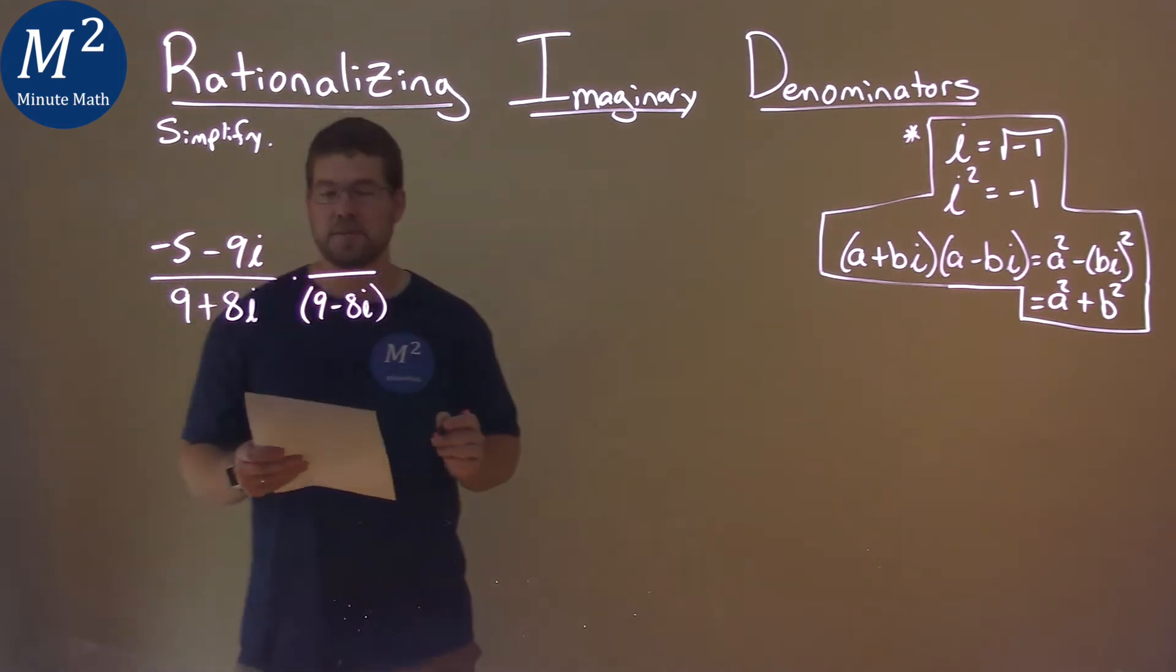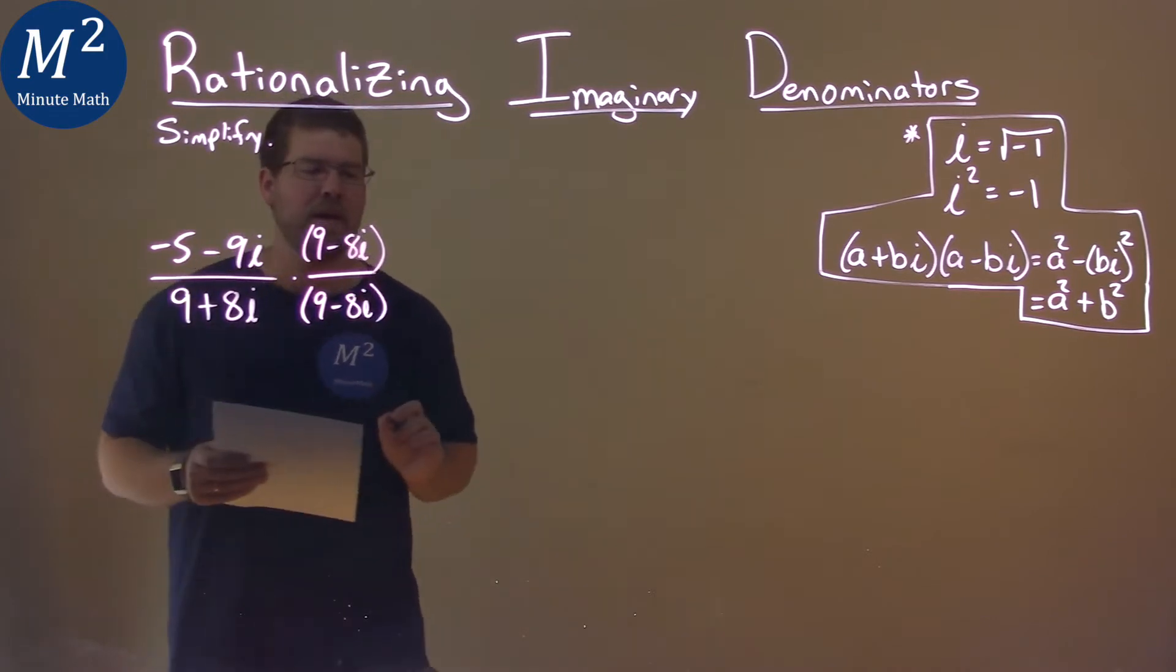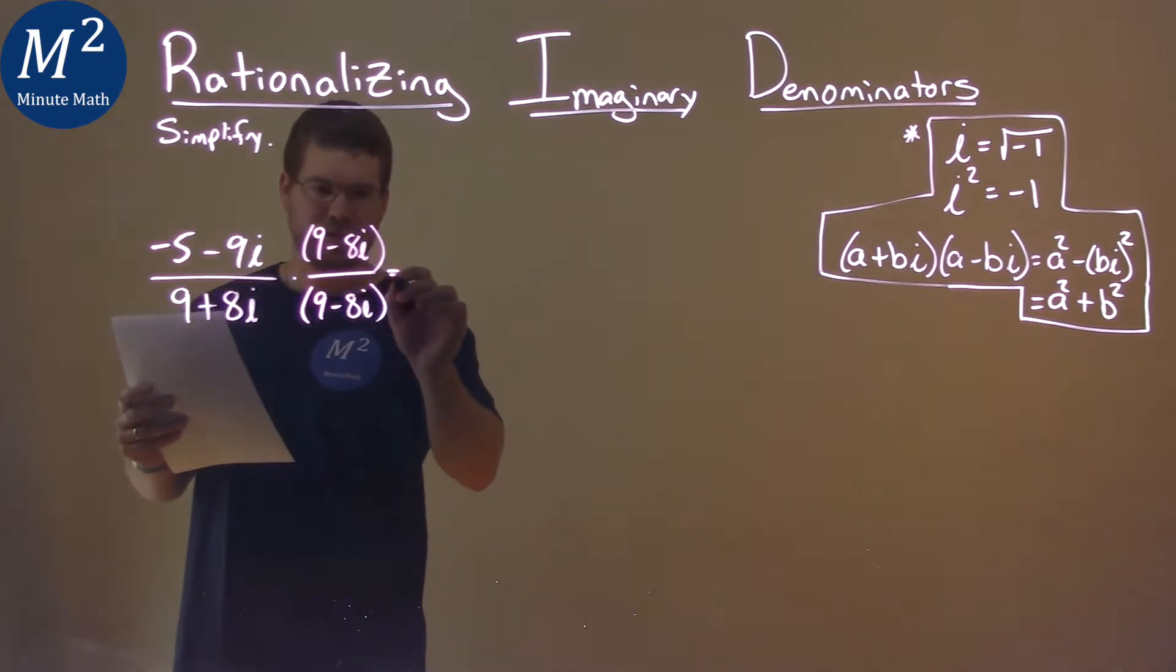Now we've got this conjugate, not too bad. Multiply it by itself, or over itself, so 9 minus 8i here, and now we can multiply these fractions out.